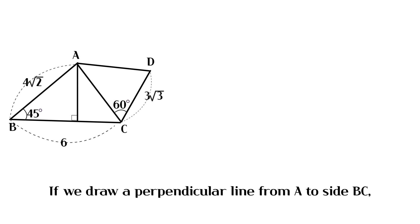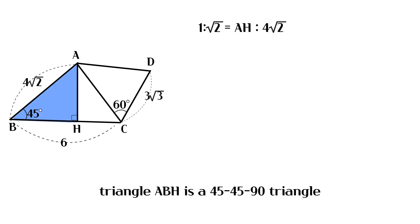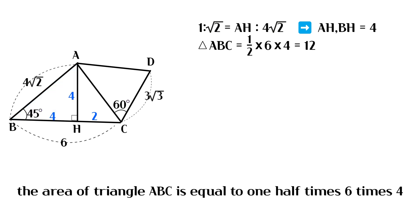If we draw a perpendicular line from A to side BC, triangle ABH is a 45-45-90 triangle. Since the length of AH and BH is 4, the area of triangle ABC is equal to 1 half times 6 times 4.